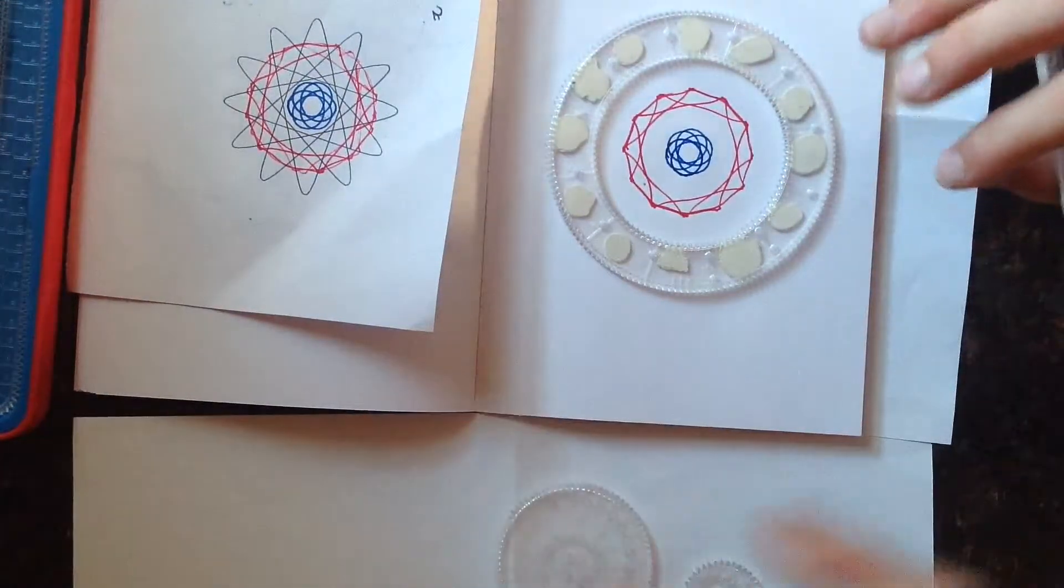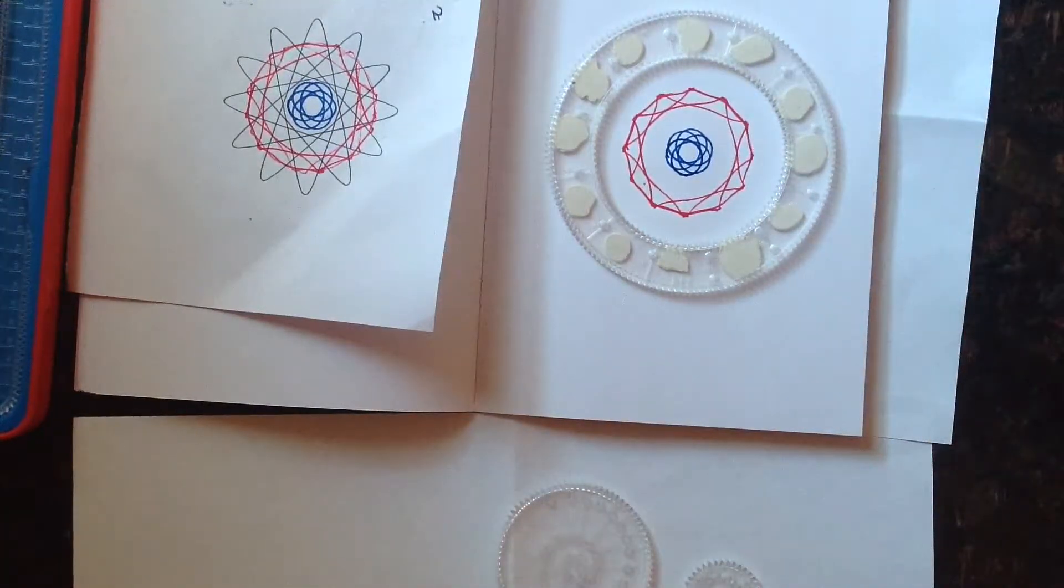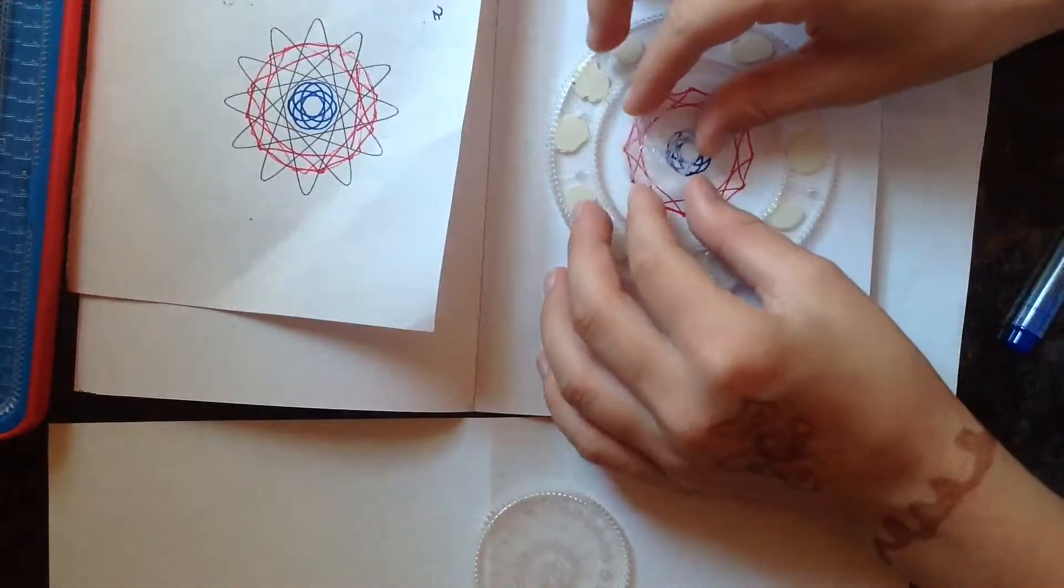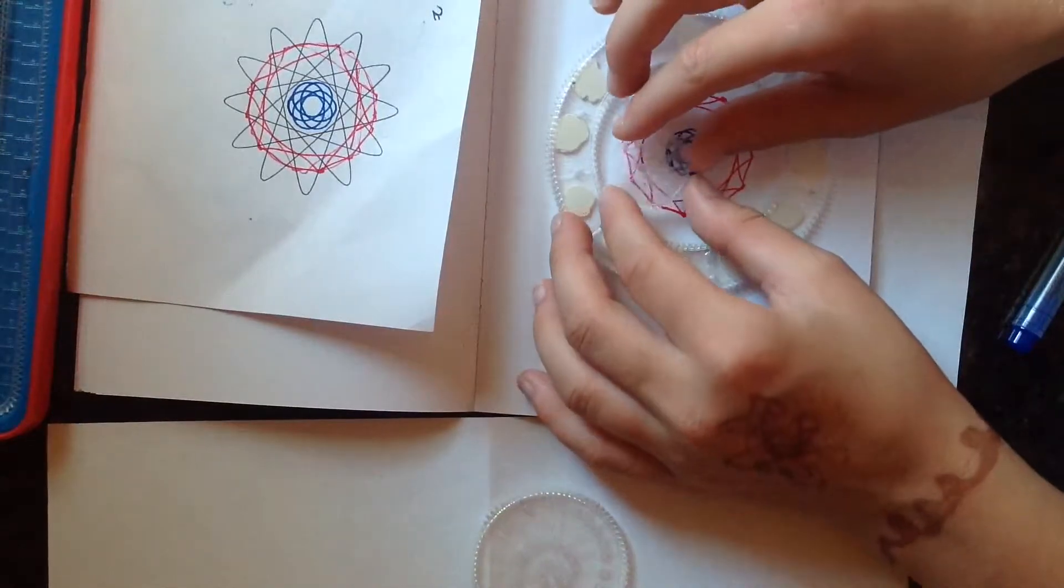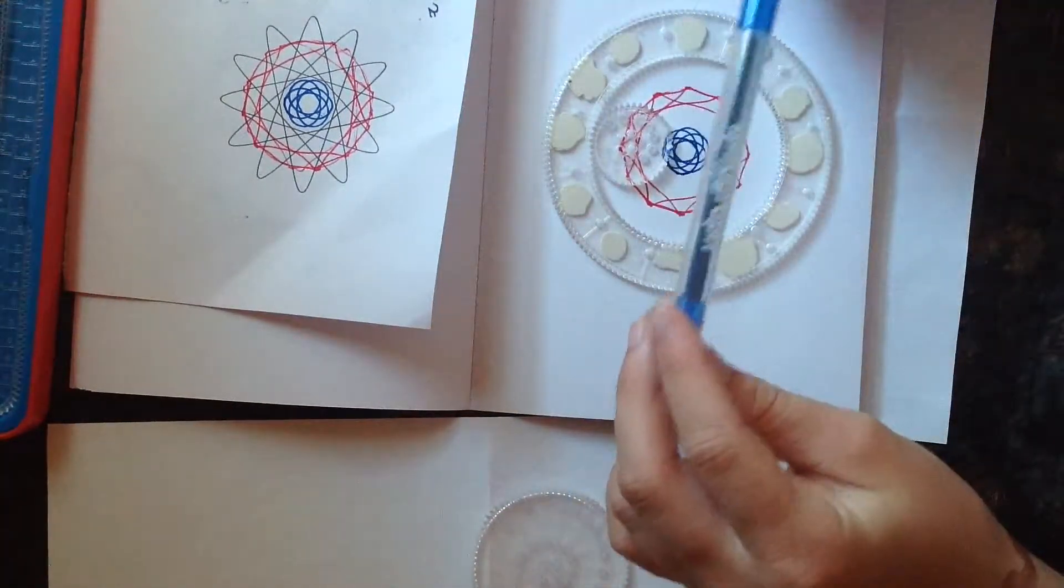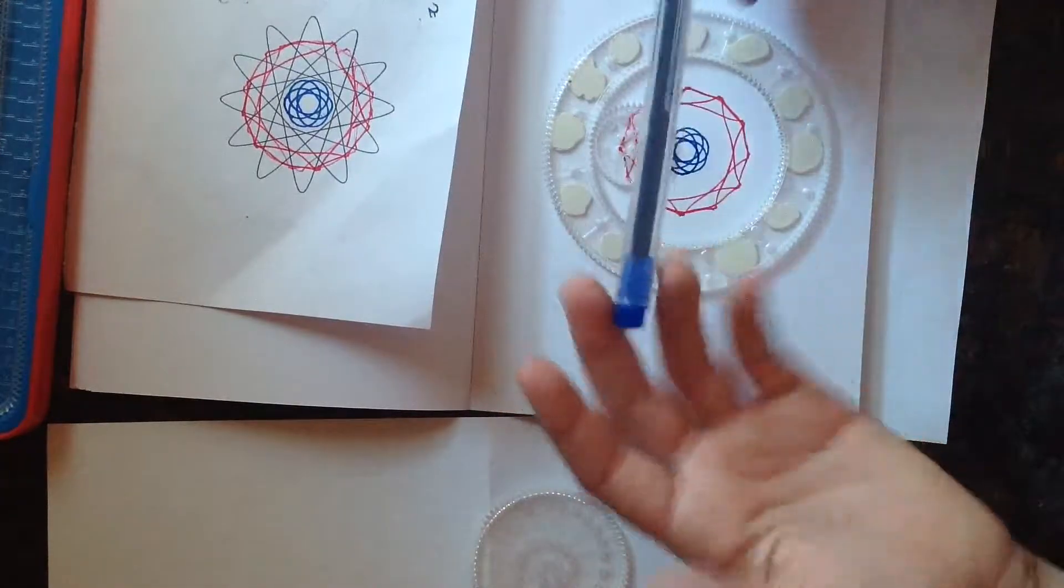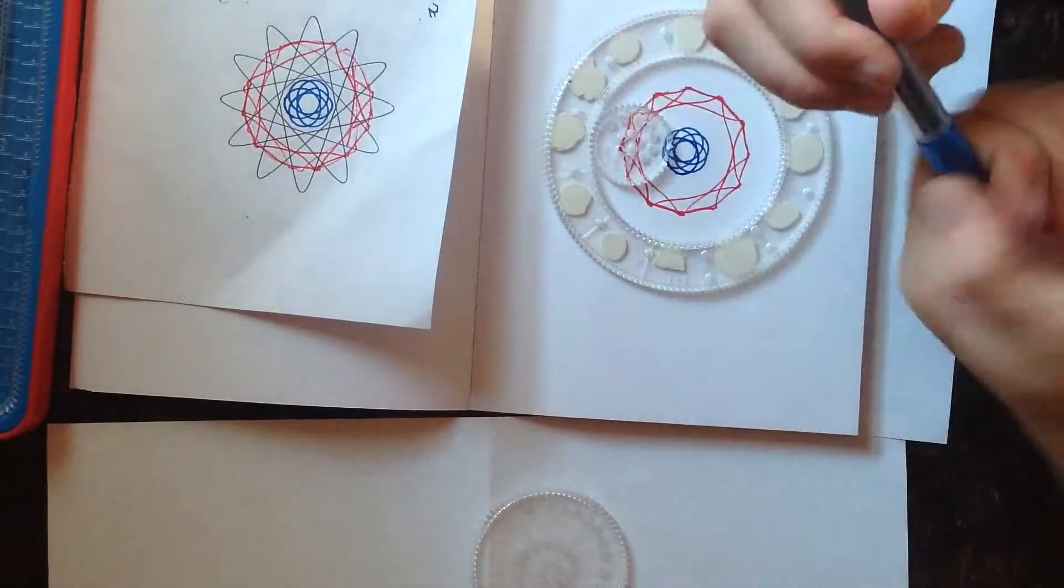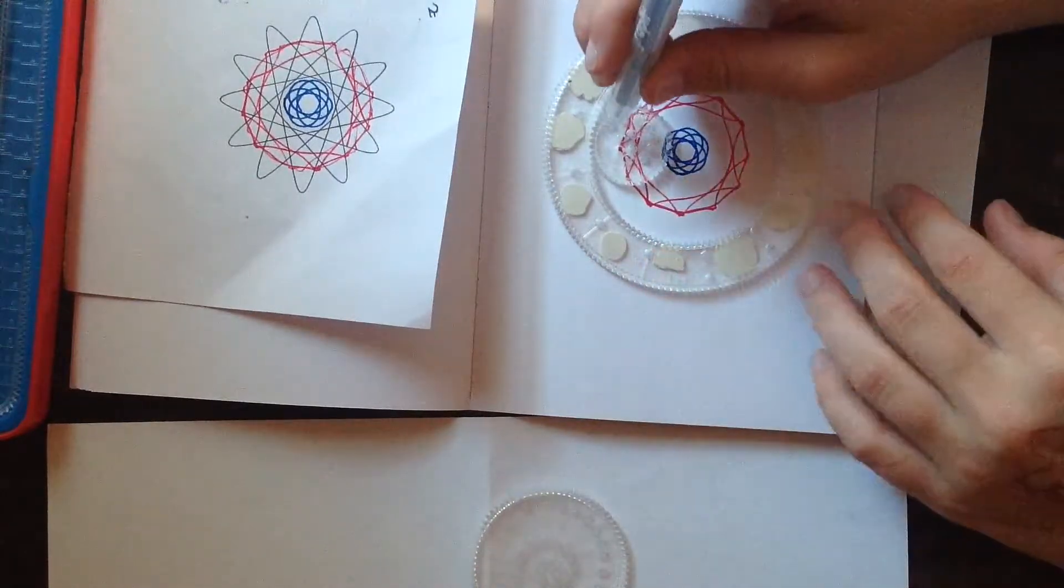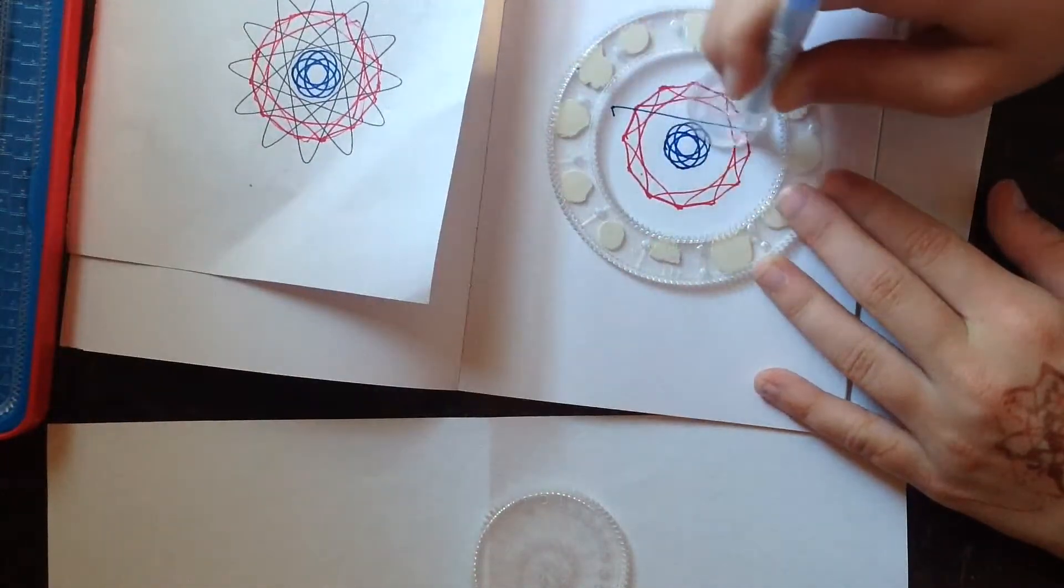Now you're going to take your size 40 wheel or gear, whatever you want to call it, and use hole number 1 with either a blue pen or whatever color you want. I'm going to use a blue pen. Put it in hole number 1 and then just go around. It doesn't matter where you start in the ring.